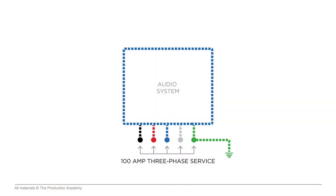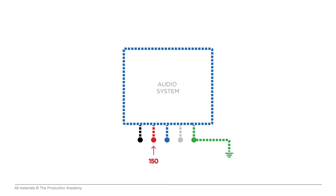When we get into large-scale productions, we even have separate 3-phase power for different parts of the production. For example, the audio system might get a 100-amp 3-phase service, which means that each hot leg delivers 100 amps, so we are actually getting 300 amps in total. But we do have to worry about balancing the load across all three legs. If we are drawing 150 amps and it's all connected to one leg, we're going to trip a breaker and lose power.